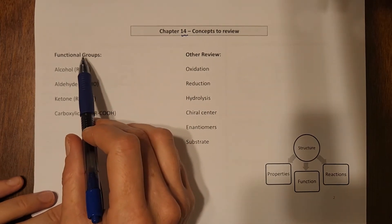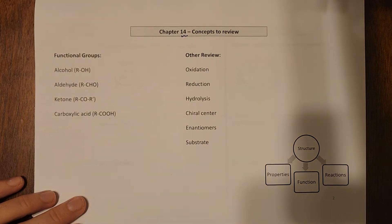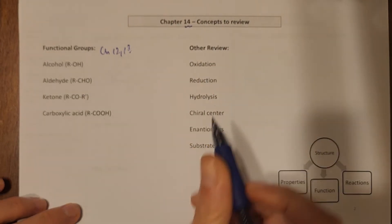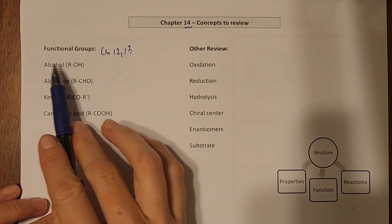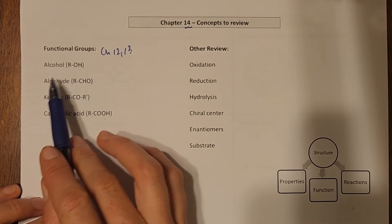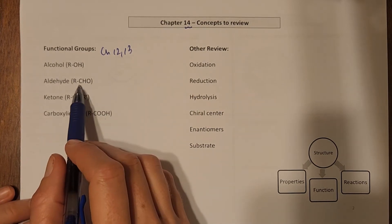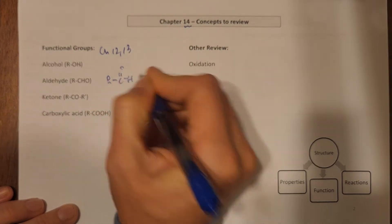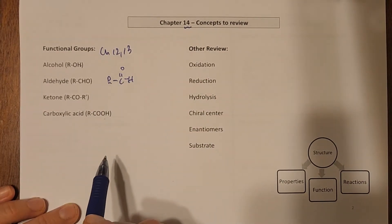First of all, we want to lean back on some of those functional groups that we had learned, primarily from chapter 12 and 13. We want to know what alcohols are. We want to be able to recognize aldehydes. This is a condensed way of drawing them, but here is another way of drawing them. Remember, R just means the rest of the molecule.